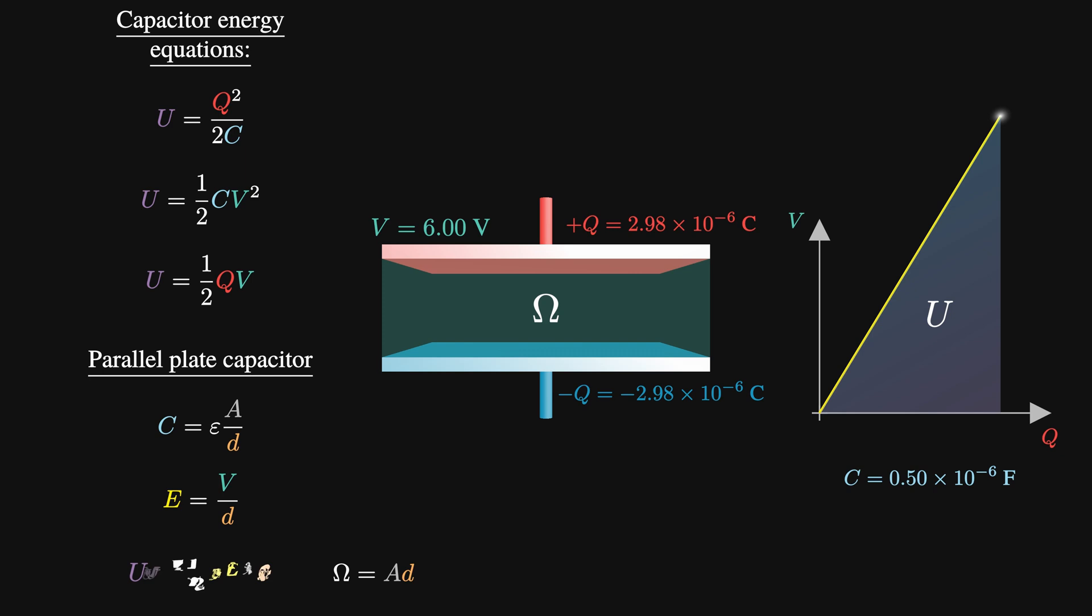So, our equation is a half times epsilon times E squared times the volume. What you see here is one of the most fundamental, powerful equations in all of physics. Why?